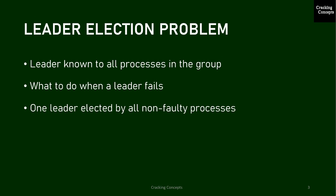Looking into the leader election problem: we have a group of processes and we need to elect a leader to undertake specific tasks, with this information known to all other processes in the group. There is also the problem of what happens when a leader fails or crashes — we need processes acting as failure detectors and a mechanism to choose the next leader. Any leader election algorithm should always ensure it elects only one leader among all non-faulty processes, and all non-faulty processes must agree on who the leader is.